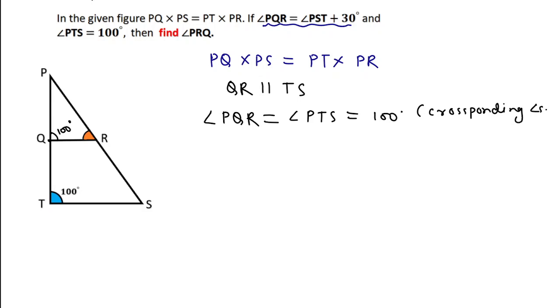According to the question, angle PQR = angle PST + 30°. So we can write angle PST = angle PQR - 30°. Angle PQR we just calculated as 100 degrees, so 100 - 30 = 70 degrees.